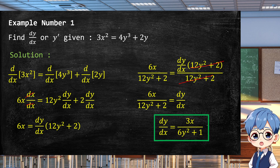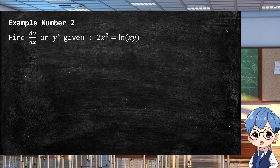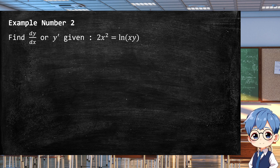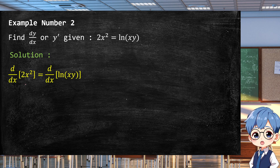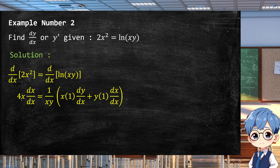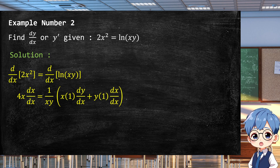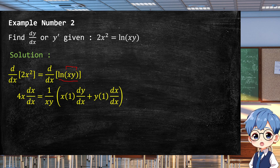Example two: find dy/dx given 2x² = ln(xy). Applying the derivative operator d/dx to each term, the derivative of 2x² is 4x with dx/dx. For ln(xy), the derivative of natural log is 1 over the argument, so we get 1/(xy), times the derivative of the argument xy. Since xy is x times y, we use the product rule.